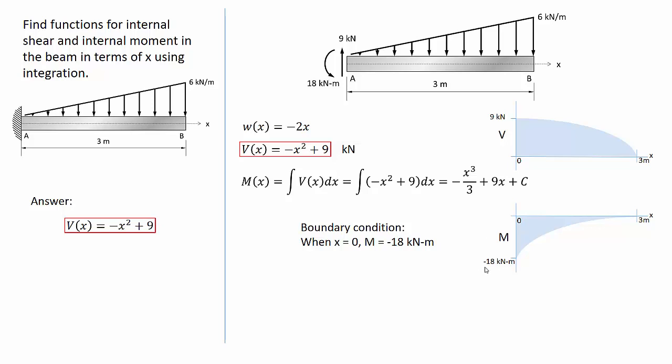Notice it's negative 18 kN meters. Remember the rule that when you have a counterclockwise concentrated moment on a beam, it causes the moment diagram to jump down. That's why it's negative 18, not positive 18.